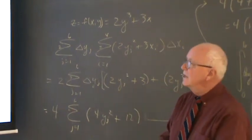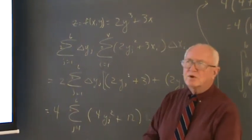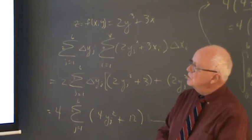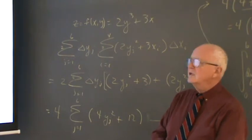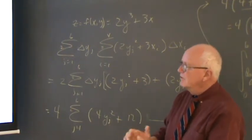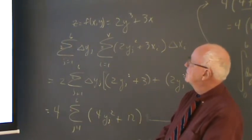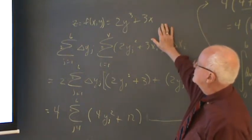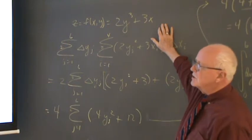I'd like to show you today how to use an approximation for a volume under a three-dimensional curve, and then to use the double integral to actually find the real value of what the volume is under the curve. I want to work with a curve which is formed by z equals a function of x and y, which is 2y cubed plus 3x.